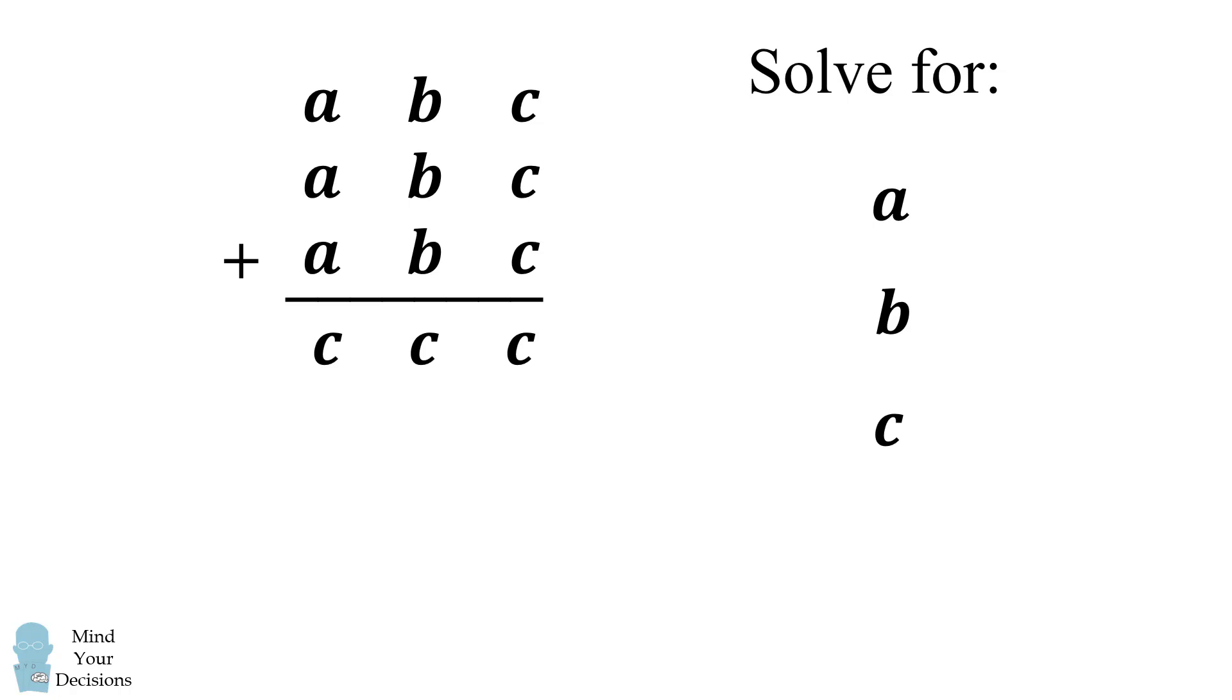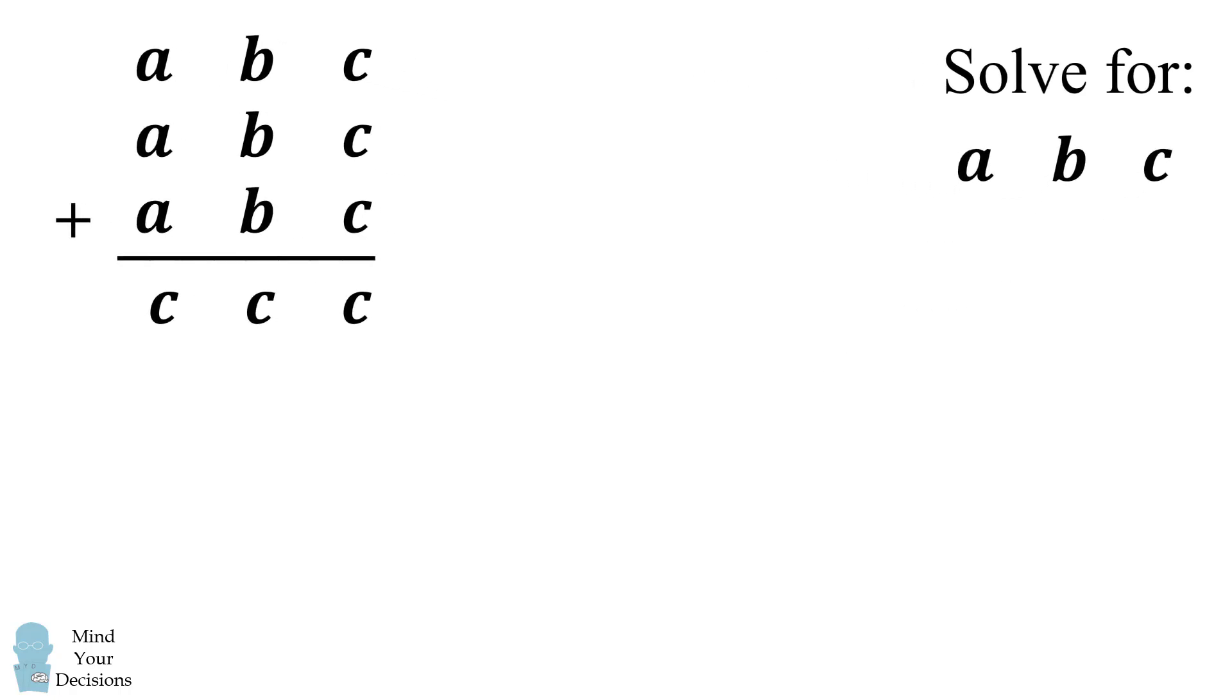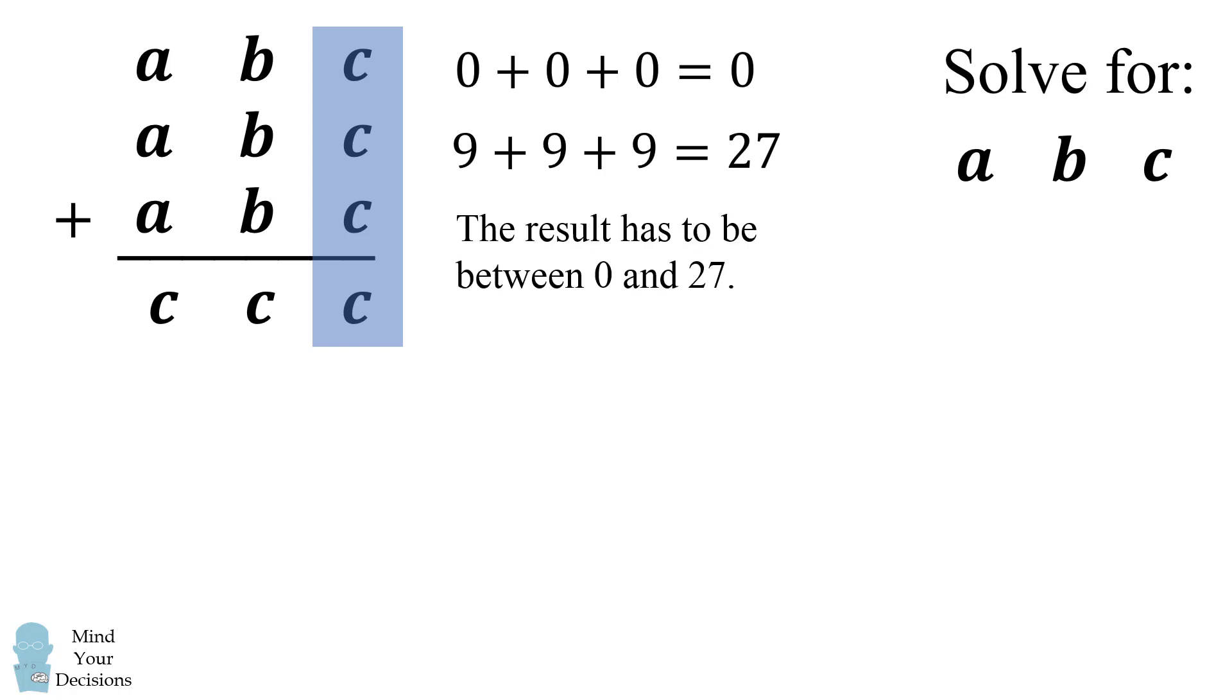Now how can we solve this? Let's take a look at the ones column. What's the possible range that we could have? Well, the smallest value for c is 0 and that would result in 0. The largest value for c is 9 and that would result in 27. So the result of this column has to be between 0 and 27.